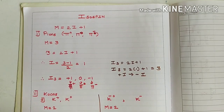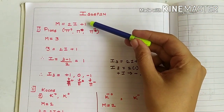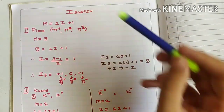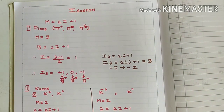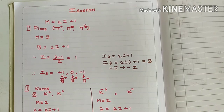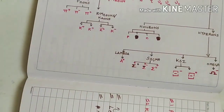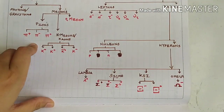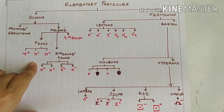We can derive isospin for all the elementary particles from the chart. The formula for isospin is given by m = 2i + 1. Here m means multiplicity. If you go back to the chart and look at the pions section, we see that pi mesons are totally 3 in number. So for pions, the multiplicity m would be 3.